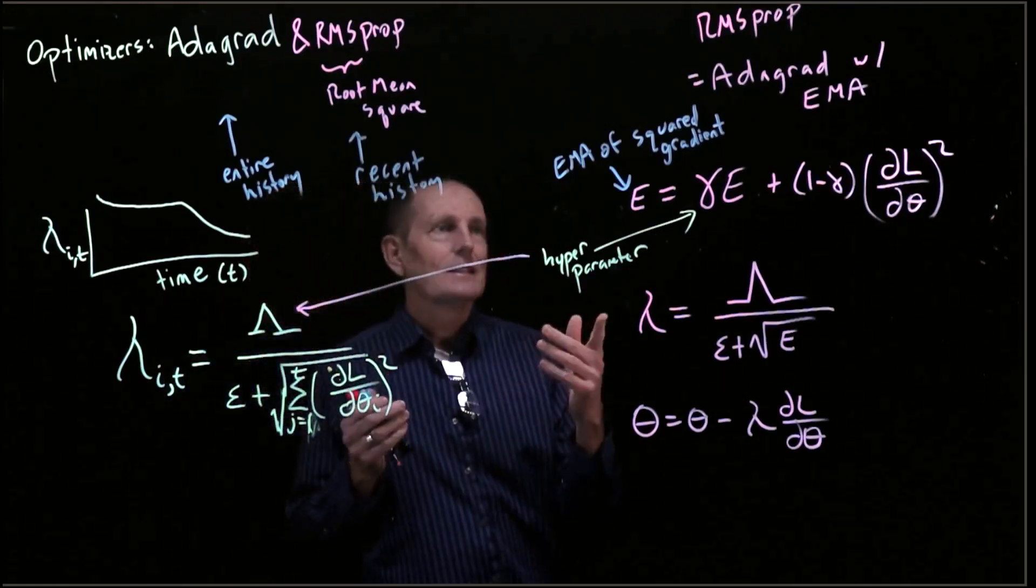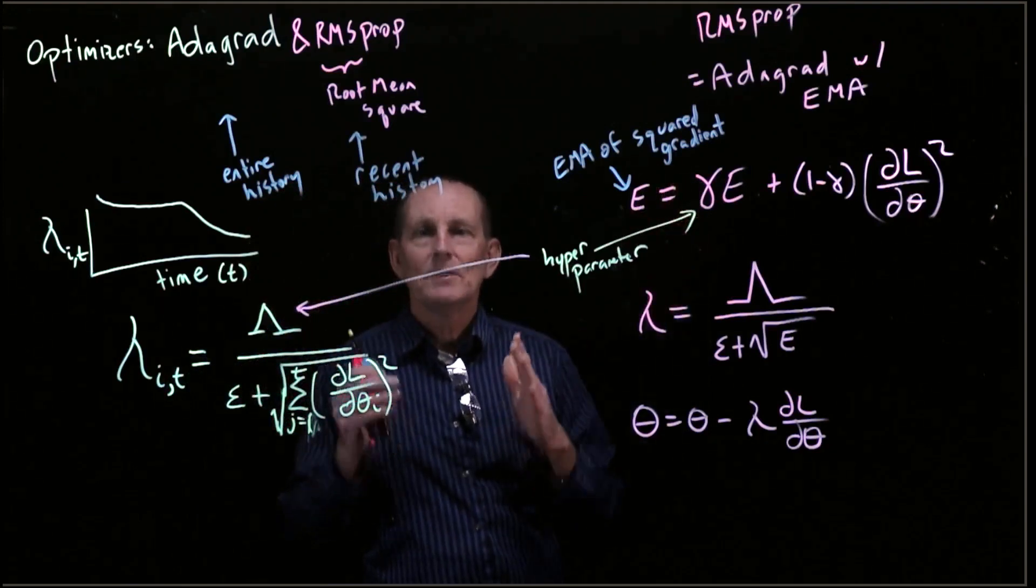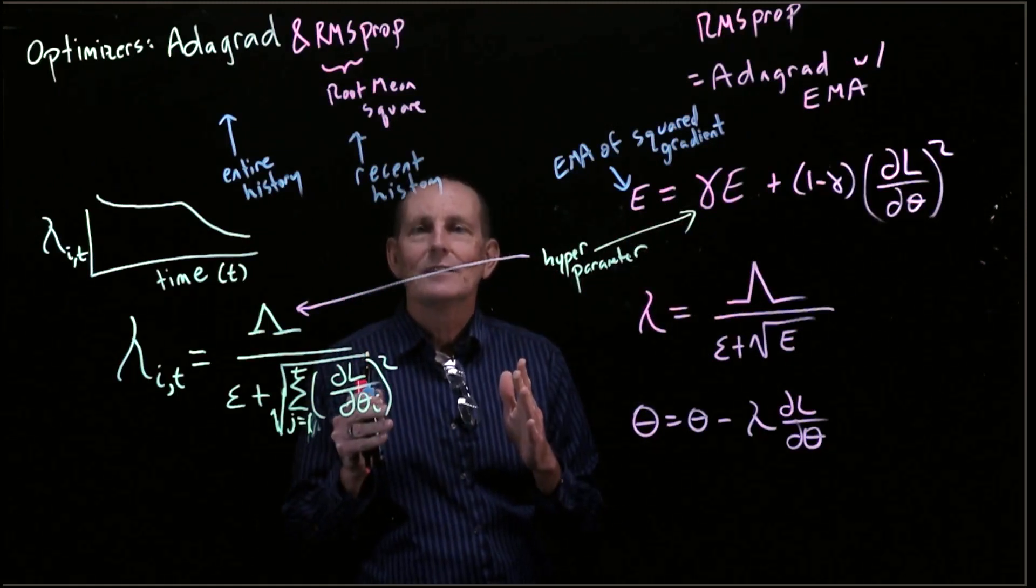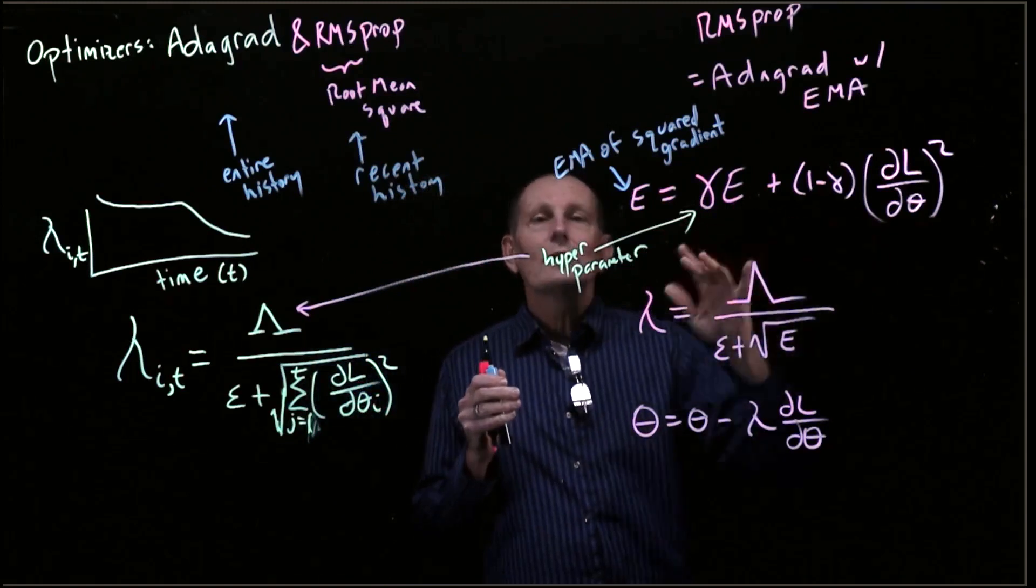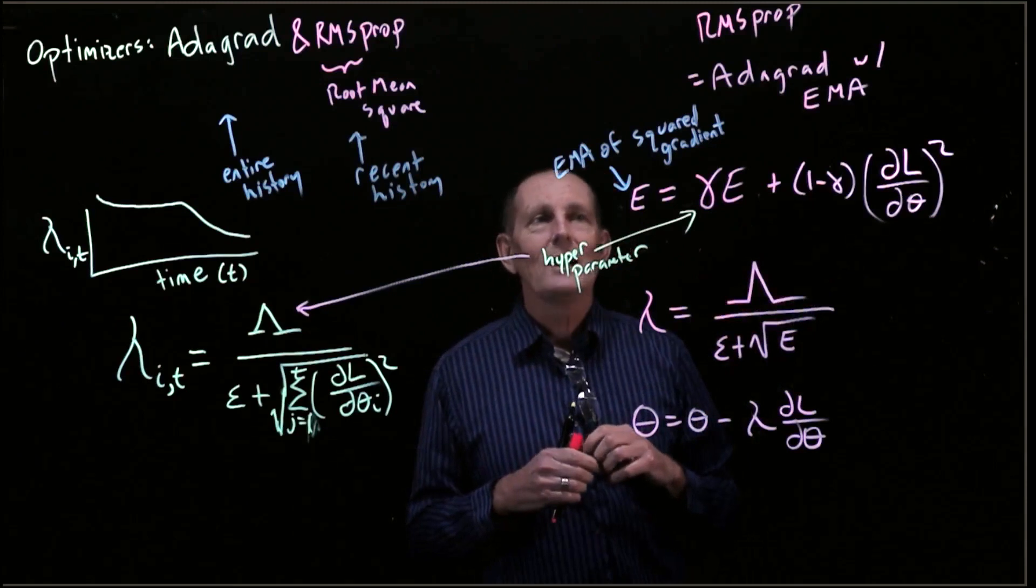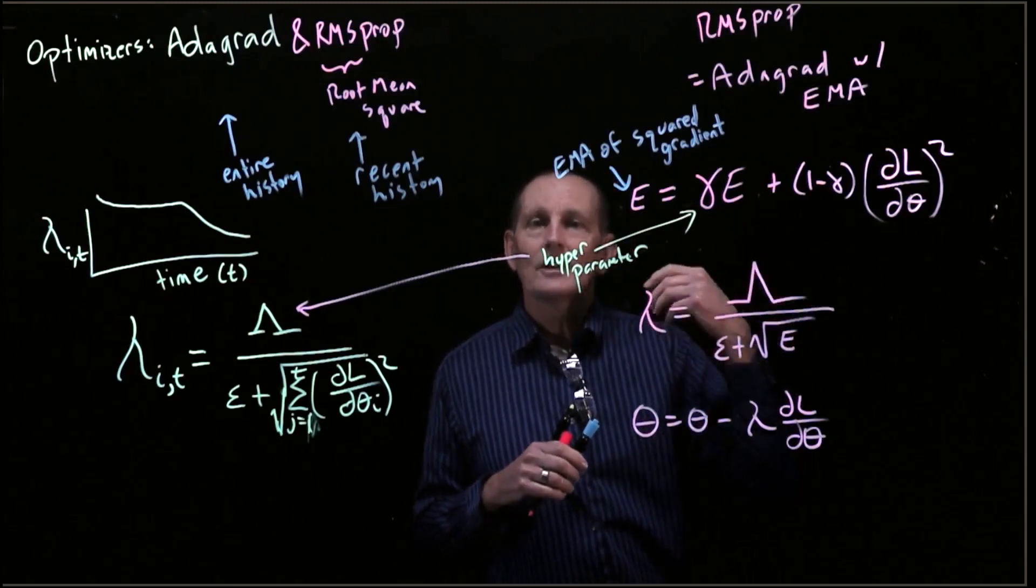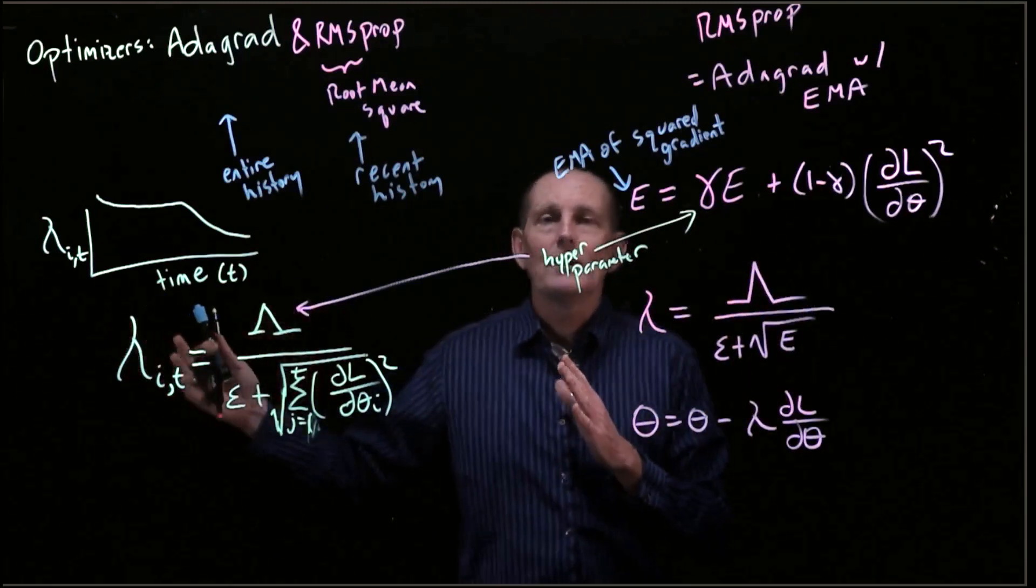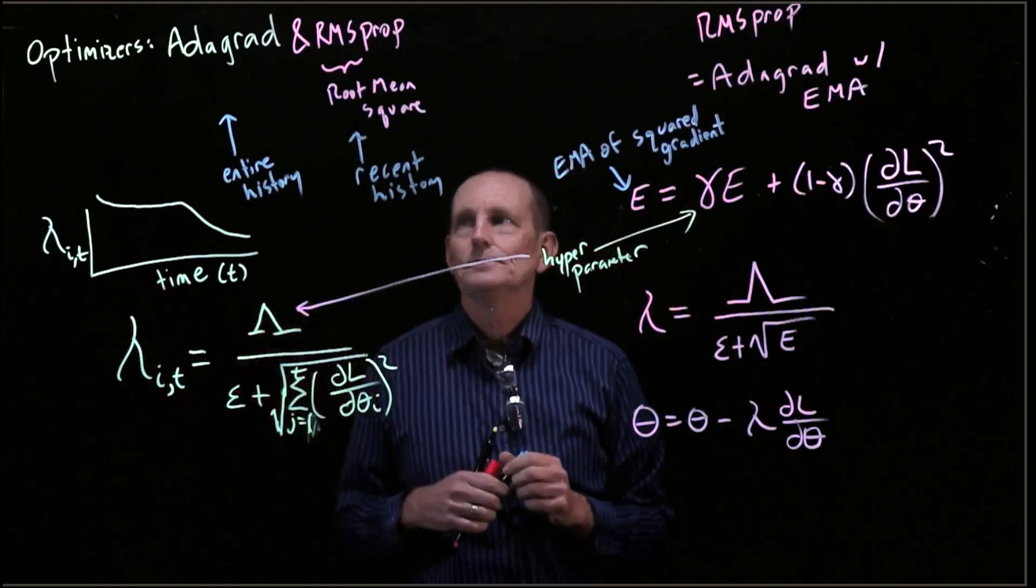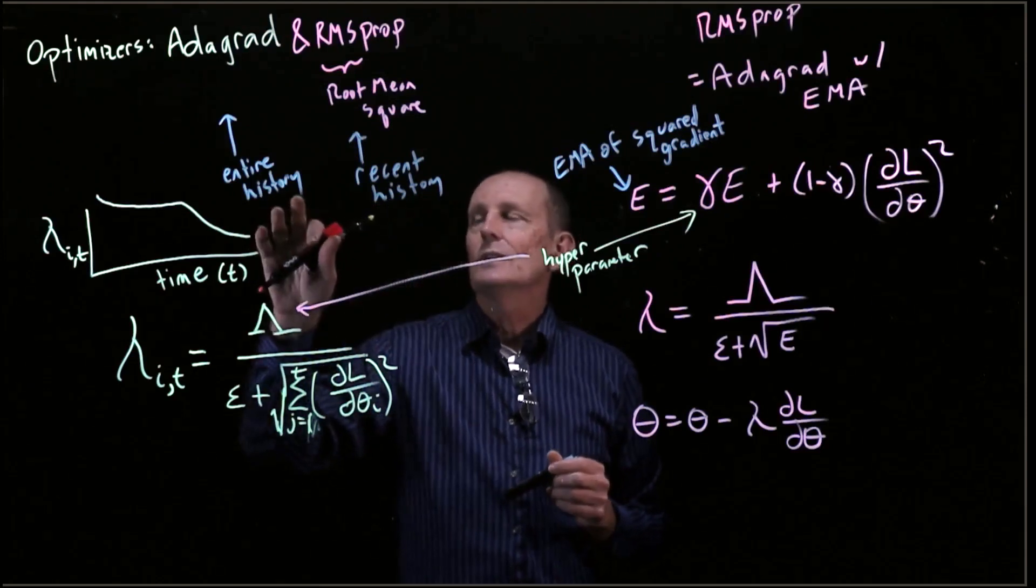So the one step ago, let's say that gamma is 0.9. The squared gradient from one step ago, we have a 0.9 factor. The squared gradient from two steps ago, we have a 0.1 factor. The squared gradient from three steps ago has a gamma to the third factor, and a gamma to the fourth, and a gamma to the fifth. So if we look back some large number, gamma to that large number basically makes that vanishingly small.